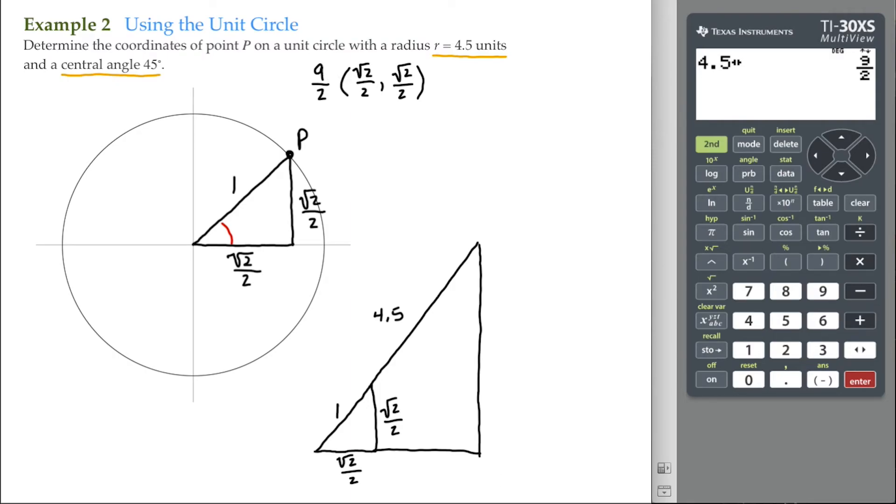So, 9 and a half times root 2 over 2. 9 times root 2 over 2. That's 9 root 2, and then 2 times 2, that's 4. I do the same here. 9 times the square root of 2. That's 9 times the square root of 2. And 2 times 2, that's 4.